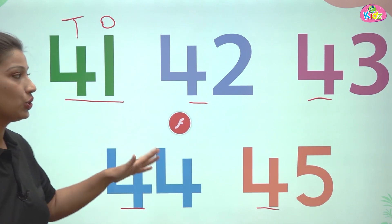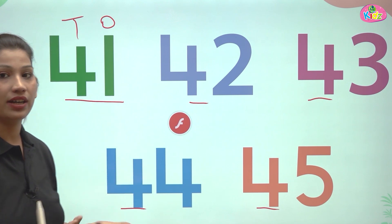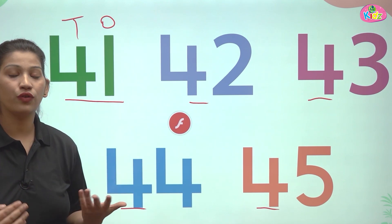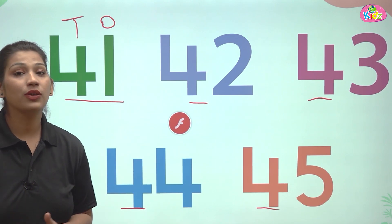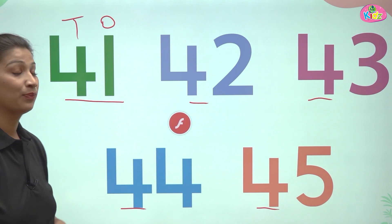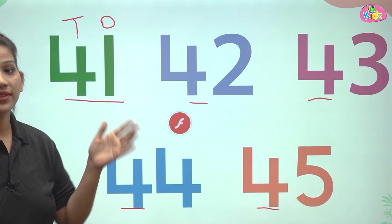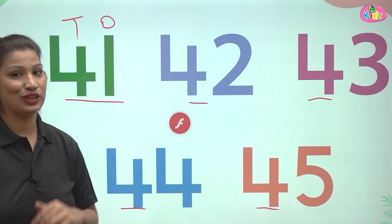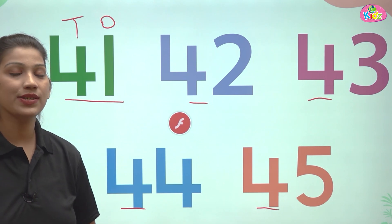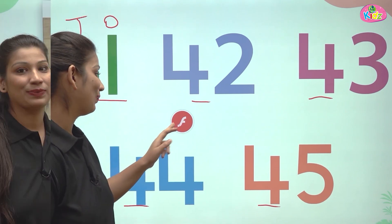One, two, three, four, five — 4 ke baad ye numbers badhte hain: 41, 42, 43, because this is a forward counting. Here students, all of the numbers are two-digit. Let us understand more about these numbers with the help of a video.